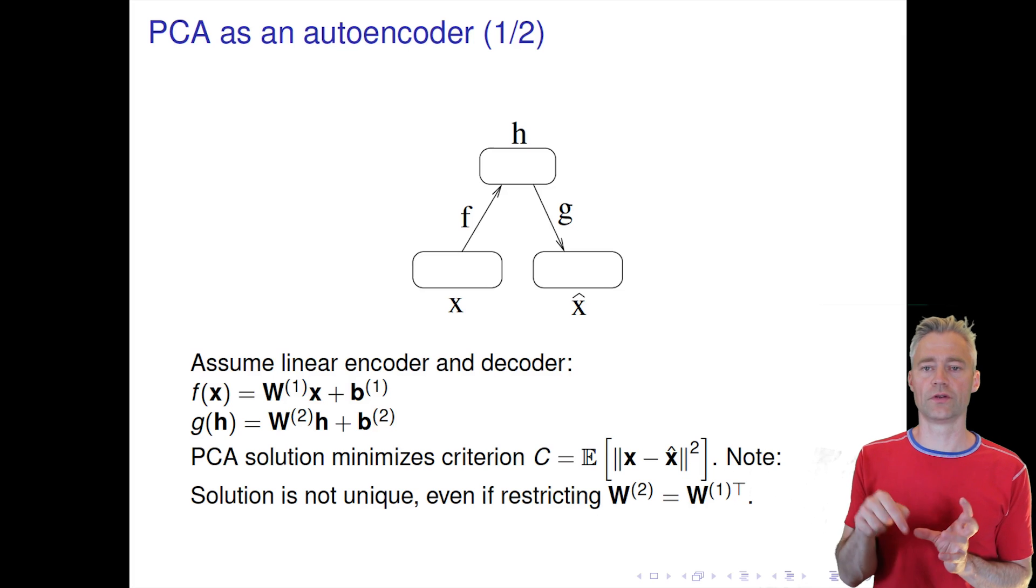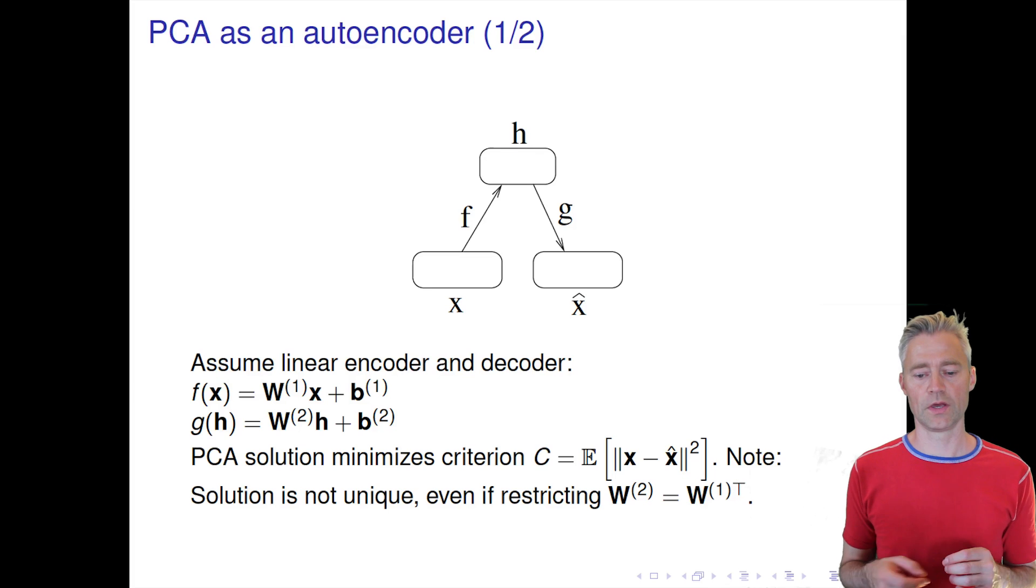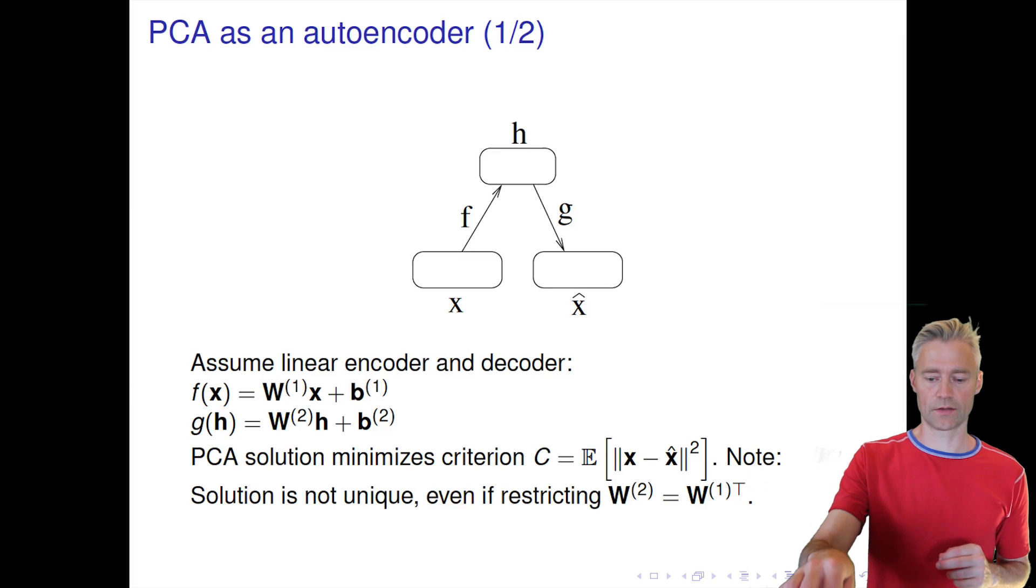You can find any rotation inside this principal subspace that will give the same solution, so there's no uniqueness. Of course, you can enforce more or less uniqueness if you sort these directions by their eigenvalue, by the variance. Then you get back exactly what you would get if you use SVD to perform the principal component analysis.